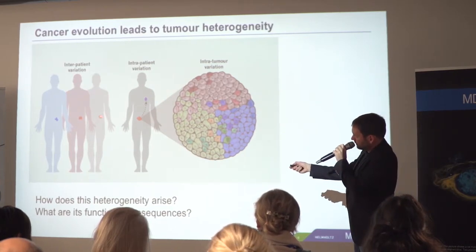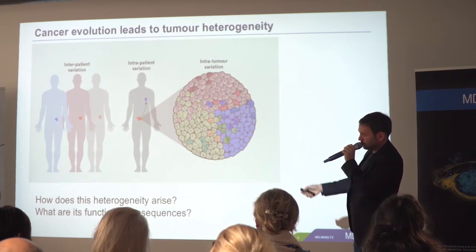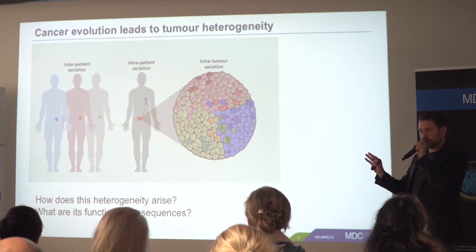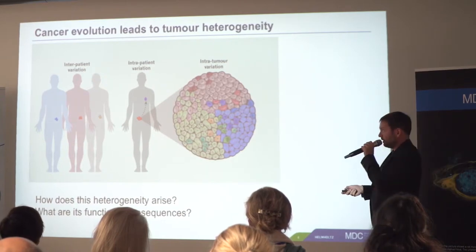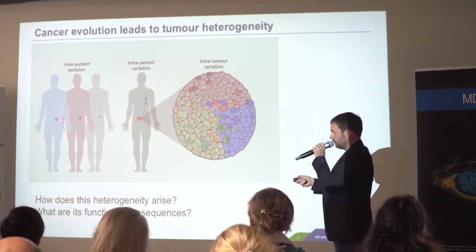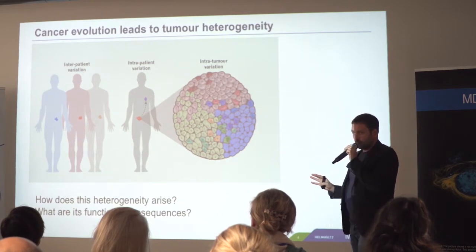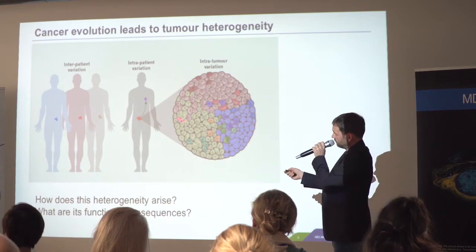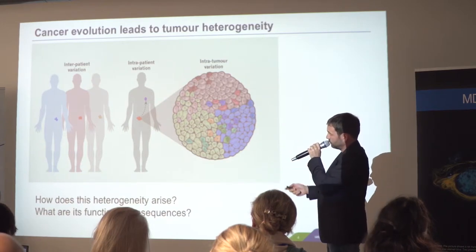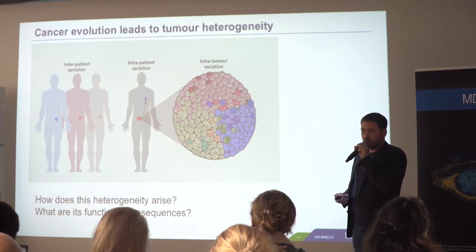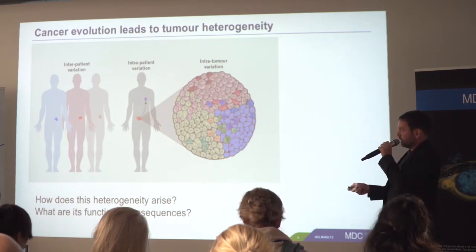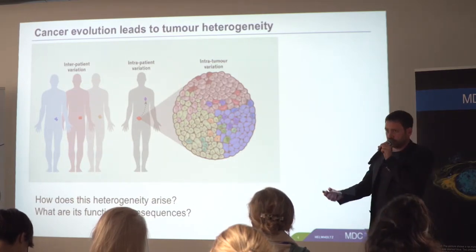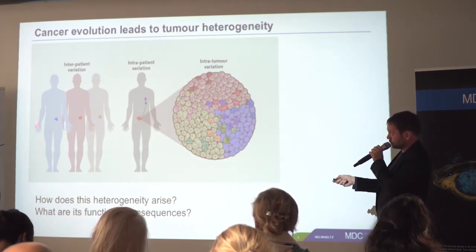We also have what is called inter-patient variation, where even if two patients have the same type of cancer — say a certain type of breast cancer — they will be very different in their genetic makeup. This concept is from the 1970s, and these two aspects are part of what makes tumor heterogeneity and cancer treatments so difficult, along with the germline variants that make patients genetically different from each other.